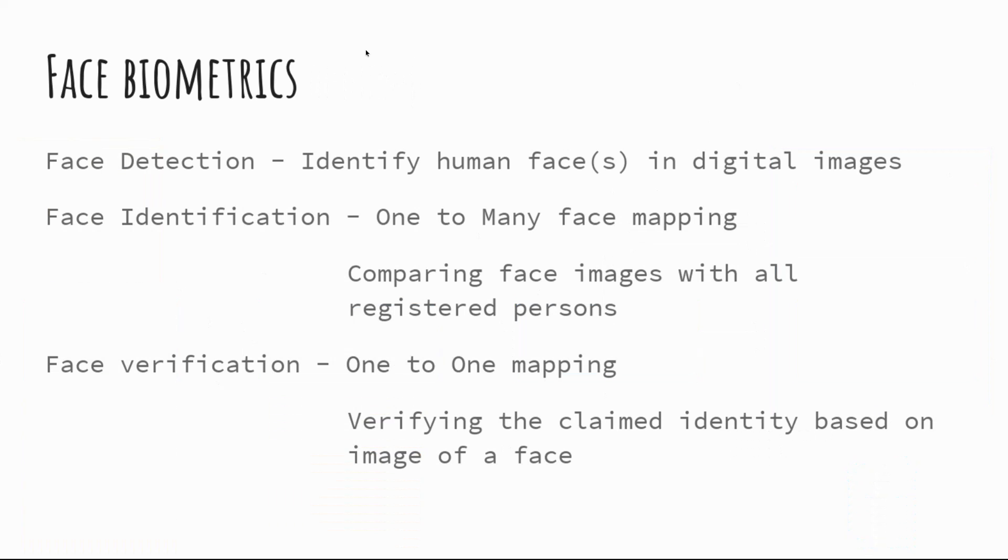Face detection is identifying human faces in digital images. Face identification is one-to-many face mapping - you're comparing faces against all registered persons or identities you're interested in. Face verification is one-on-one mapping.